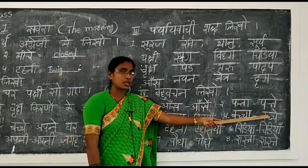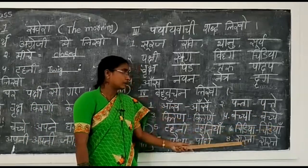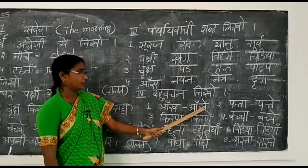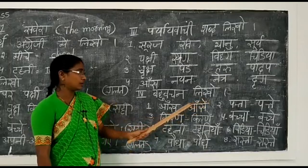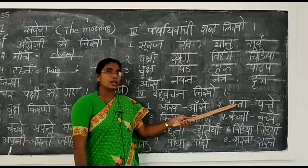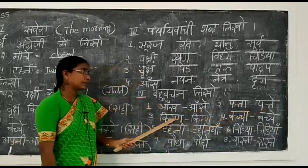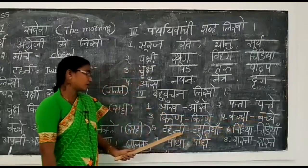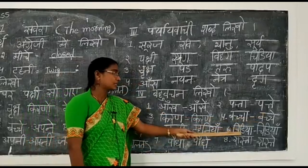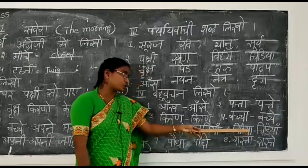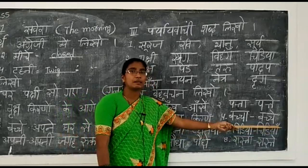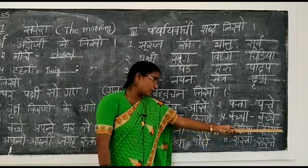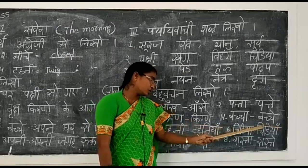Baccha becomes Bacche. Chidiya becomes Chidiyan - note a small difference: the bahu vachan form has an ardha chandra bindu symbol added. Raastha becomes Raaste. To review: Aankh (ek vachan) - Aankhen (bahu vachan). Patta (ek vachan) - Patte (bahu vachan). Kiran - Kiranem. Baccha - Bacche. Tahani - Tahaniya. Chidiya - Chidiyan, with the ardha chandra bindu. Paudha - Paudhe. Raasta - Raaste.